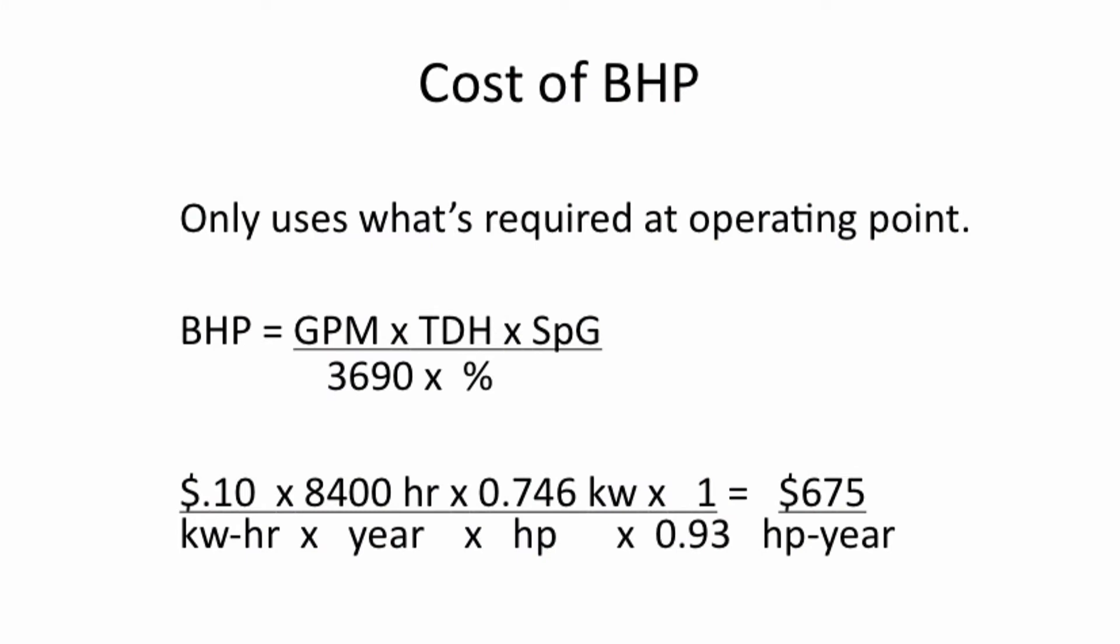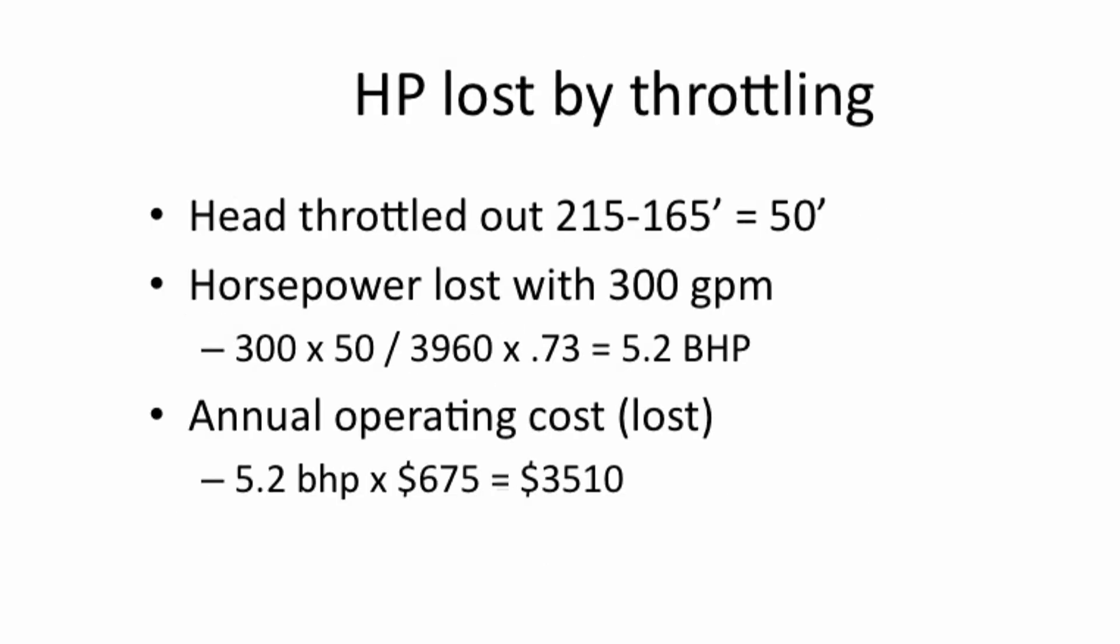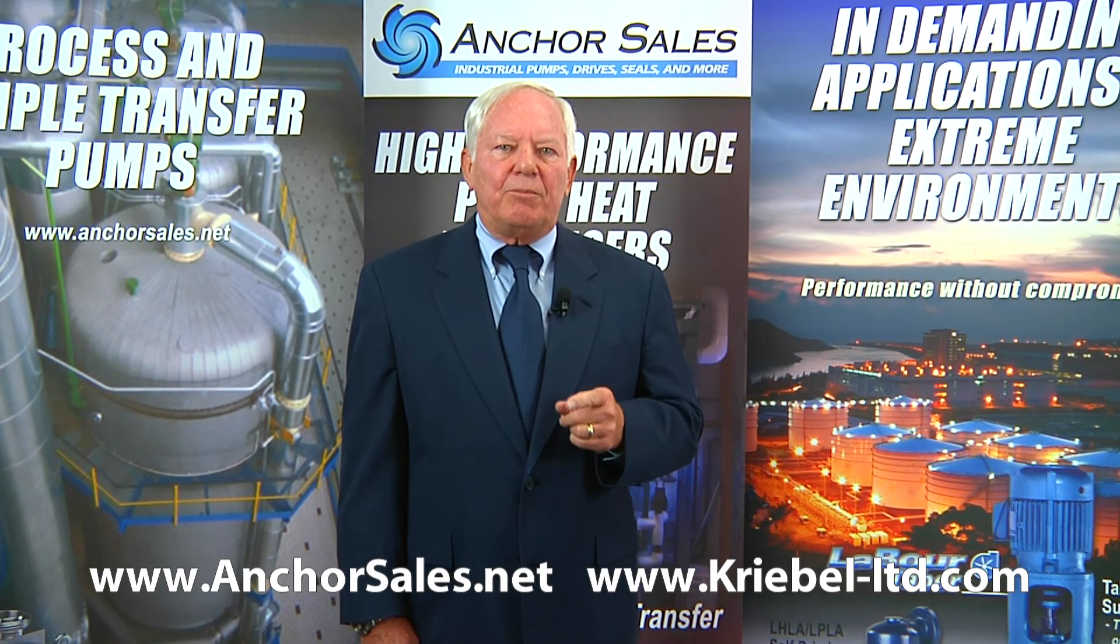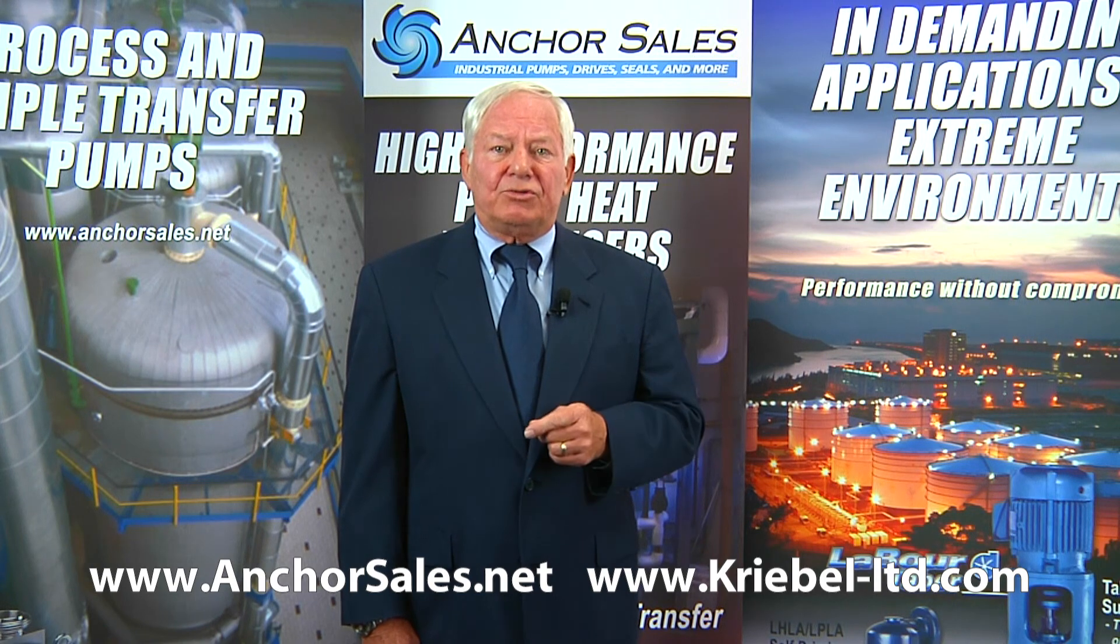The cost of a horsepower is shown here for $0.10 per kilowatt hour and for an 8,400 hour year, and with a motor efficiency of 93%, and in this case it's 5.2 additional horsepower. This horsepower is being wasted every minute the pump runs, and at $0.10 a kilowatt hour and 24-7 operation, this would be $3,510 per year. That's a lot of money for a pump and motor that might only cost $2,500.